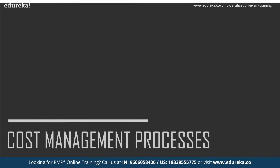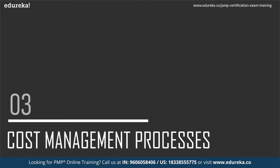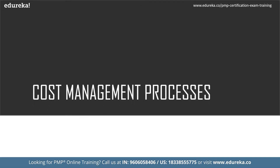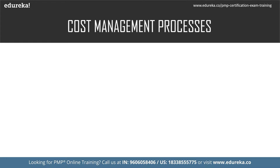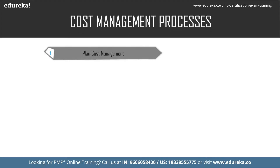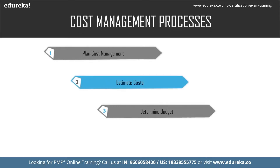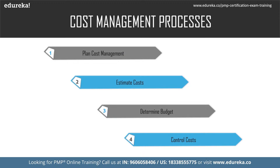Let us look at the cost management processes. Cost management includes four processes: plan cost management, estimate cost, determine budget, and control cost. Plan cost management, estimate cost, and determine budget are part of the planning process group, whereas control cost falls under the monitoring and controlling process group.